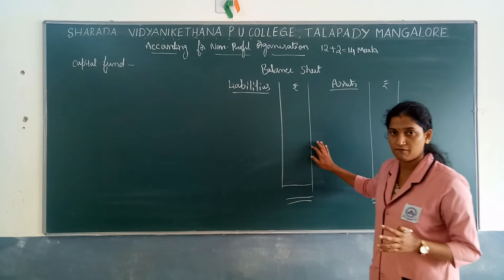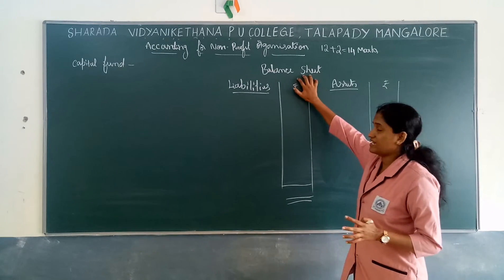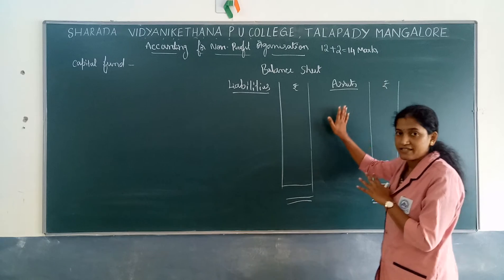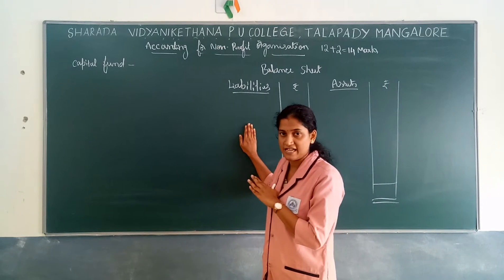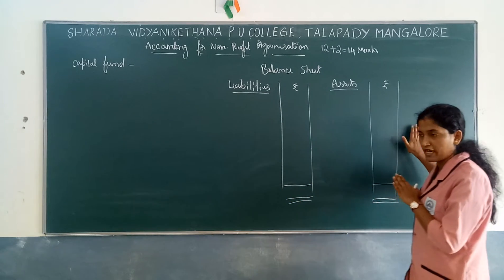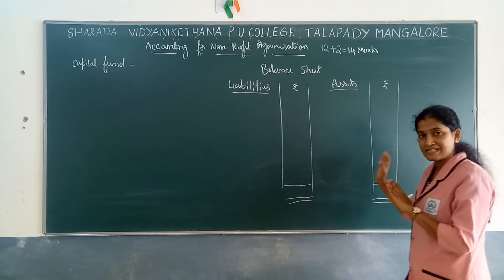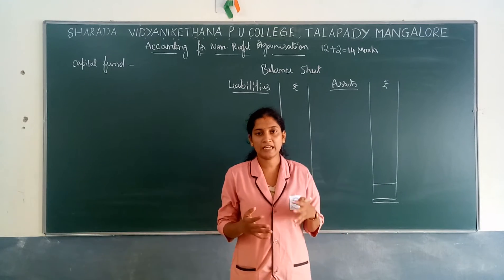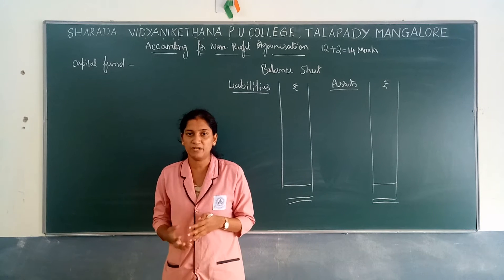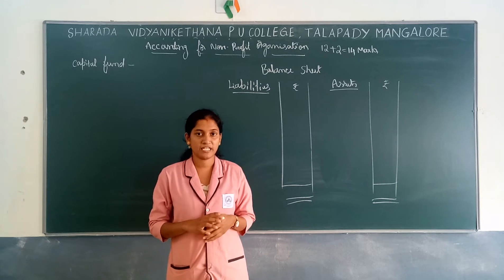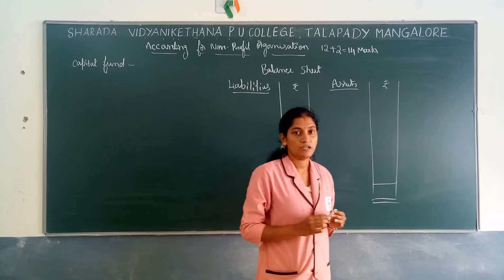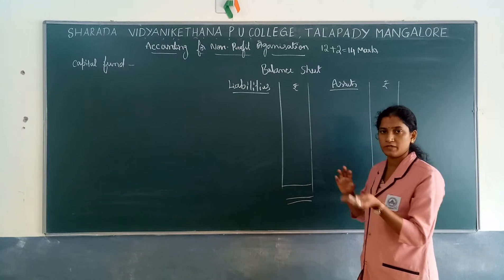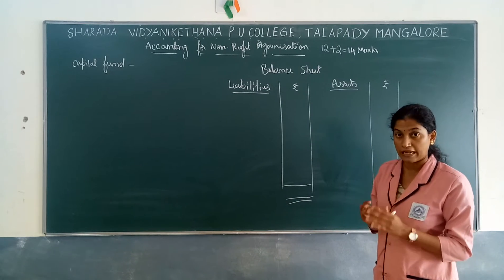Here we have the Balance Sheet format. The Balance Sheet is as on a given date. We have an Assets side and a Liability side, with two amount columns. Assets and Liabilities contain mostly the same items as we studied in the previous year, but here some items are extra. You need to understand which items are Assets and which are Liabilities.